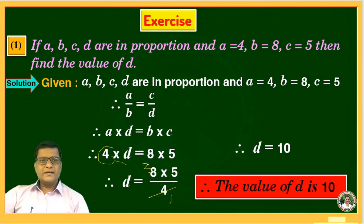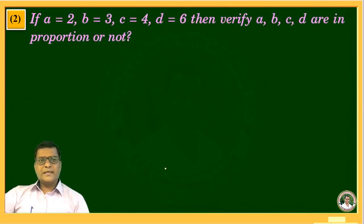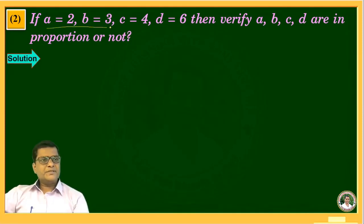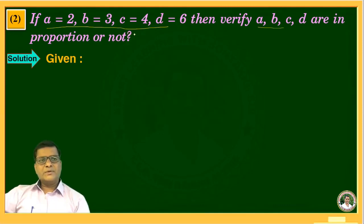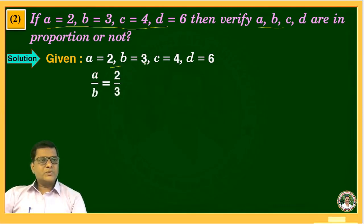Therefore the value of D is 10. The second question of this exercise is: if A equals 2, B equals 3, C equals 4, D equals 6, then verify whether A, B, C, D are in proportion or not. The values of A, B, C, D are given. To verify, first write down the given things, then find the ratio of A to B and C to D. Given: A equals 2, B equals 3, C equals 4, D equals 6. Now find the ratio A upon B, which is 2 upon 3. If simplification is possible then simplify, otherwise keep as it is. This is equation one.